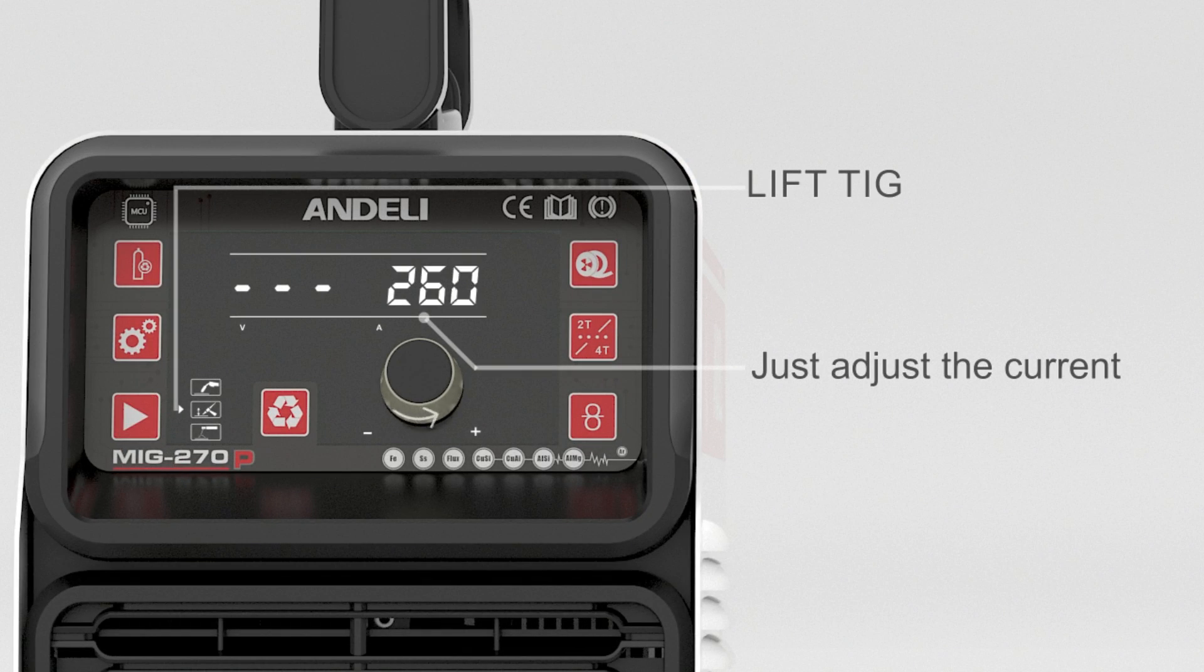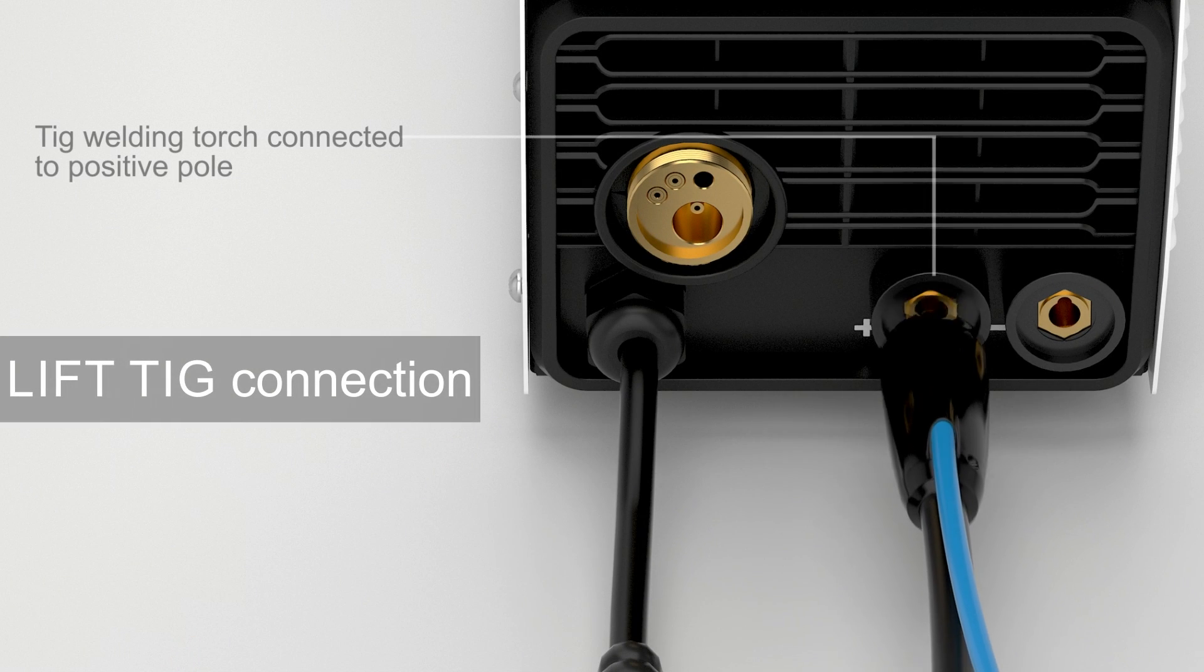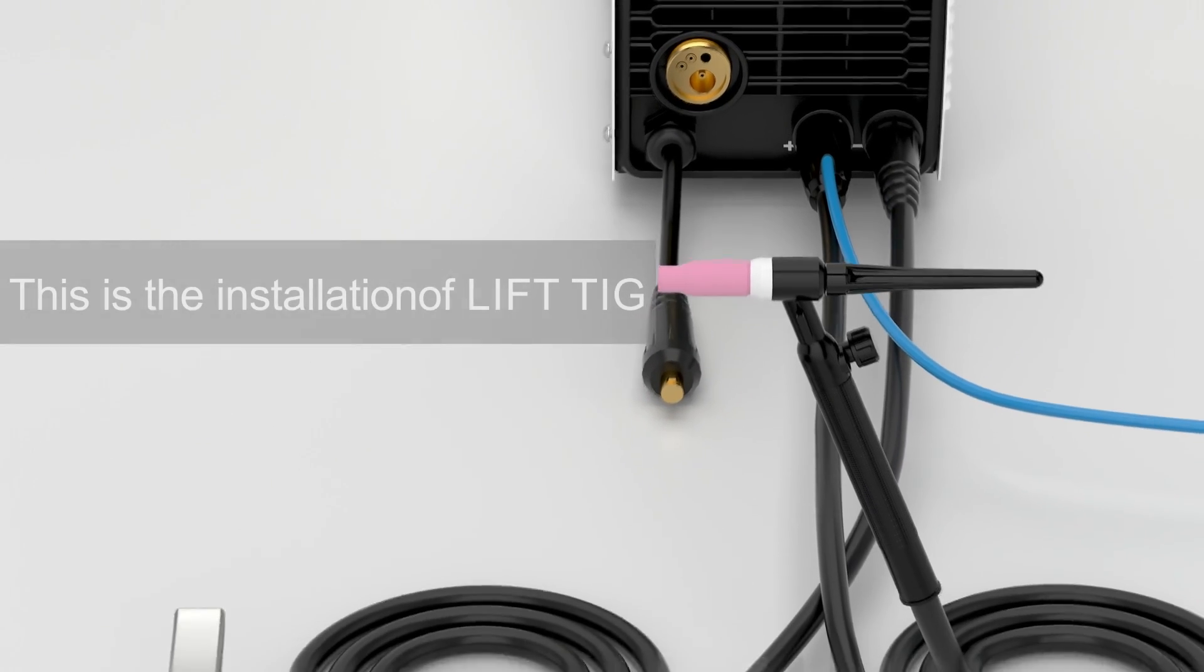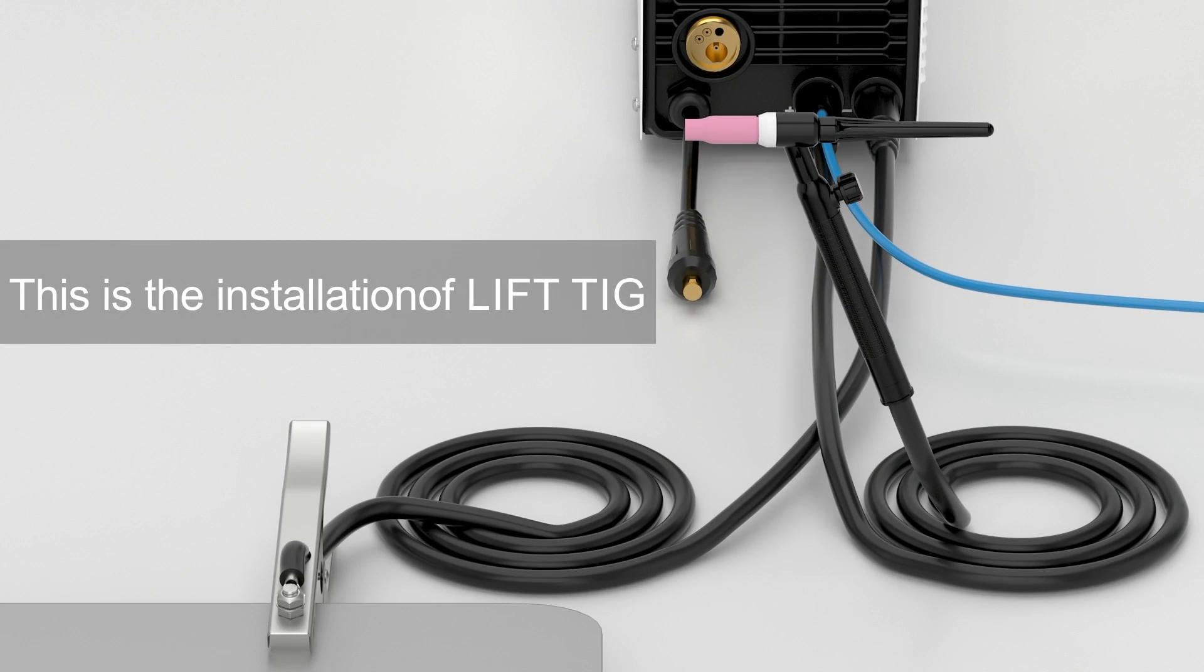Lift TIG: adjust the current as needed. Lift TIG connection: TIG welding torch connected to positive pole, ground clamp connected to negative pole. This is the installation of lift TIG.